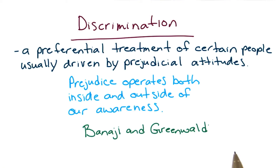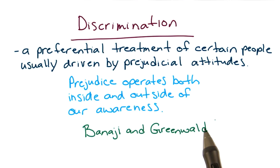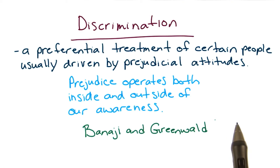Now, how do we know this, and how can we measure it? Two researchers, Banaji and Greenwald, suspected that there was a disconnect between people's conscious and unconscious views of prejudice, and they developed a very interesting way to measure this. Go to the link below in the instructor's notes section and take the test for racism.